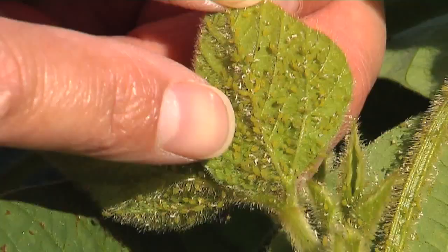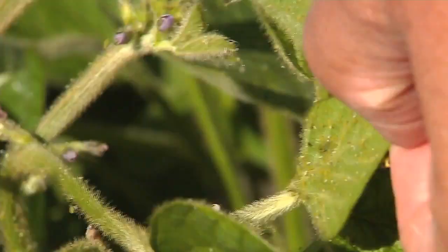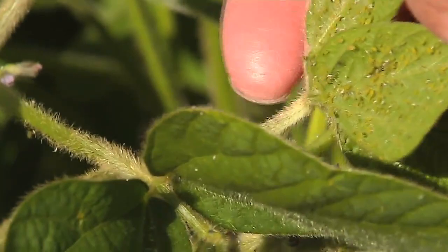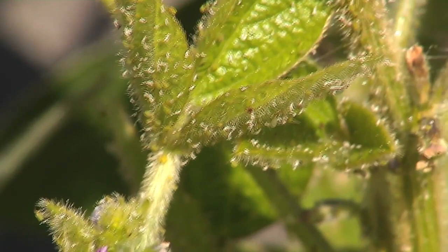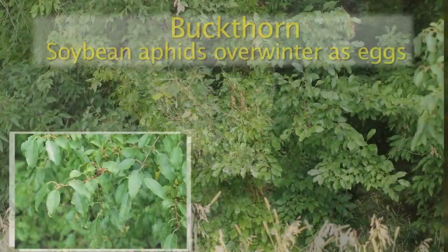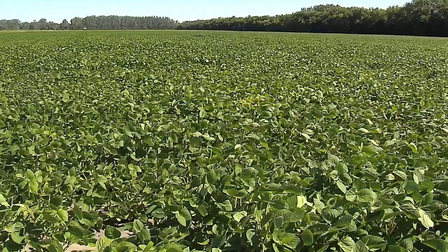Part of the reason is we have aphids that migrate up into North Dakota from the southern states, and also the population levels vary year to year within the state because the eggs overwinter on the buckthorn, and it has multiple generations — up to 15 or more per year — so the populations can fluctuate.